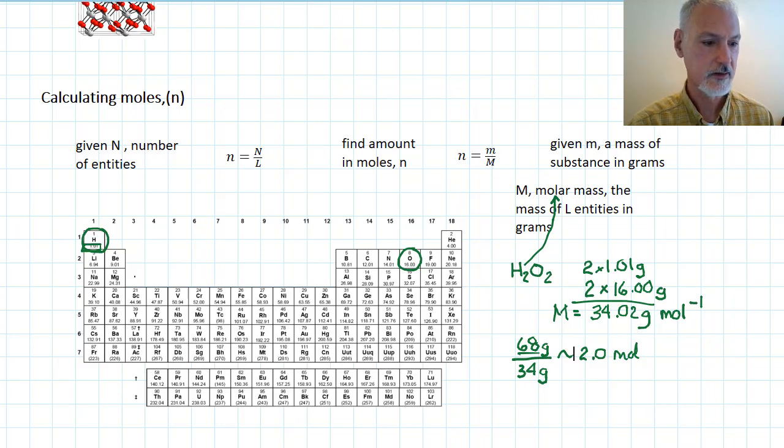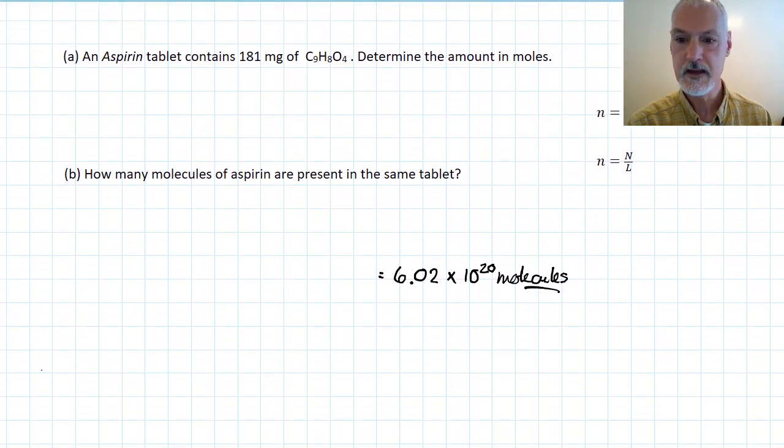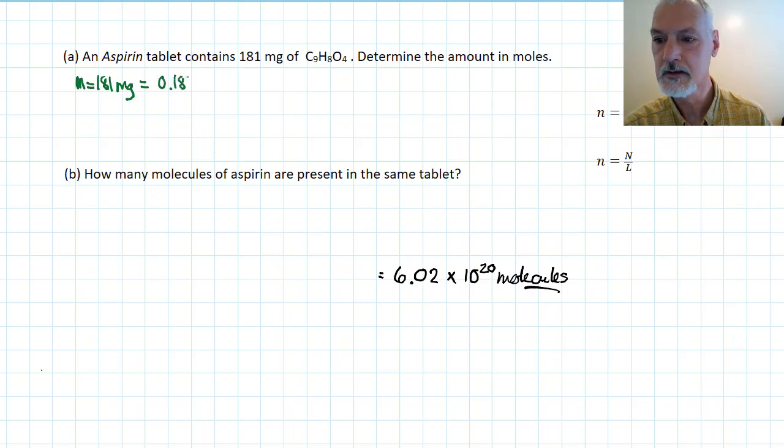Let's use this in another example. An aspirin tablet. In an aspirin tablet, we have 181 milligrams. So, my mass is 181 milligrams, which I'm going to convert to grams by dividing by 1,000. I'm asked how many moles are present. Well, given the mass and moles, and if I consult my formulas over here, it's fairly obvious that this is the one I'm going to need to deal with to calculate my number of moles.